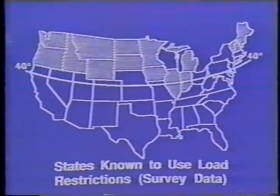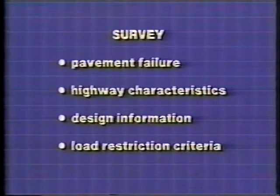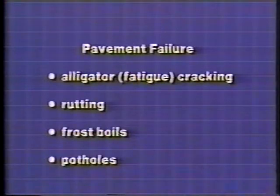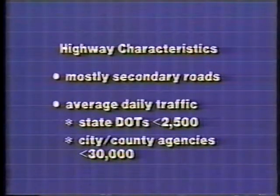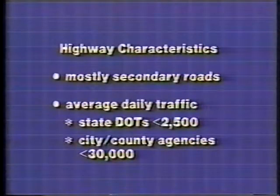Where are load restrictions normally used in the United States? A 1985 survey showed that the shaded states use load restrictions, which coincides with the area north of the 40-degree latitude line. The survey asked about types of pavement failures, highway characteristics, design information, and load restriction criteria. Load restrictions are applied to both primary and secondary roads, but mostly secondary. State agencies generally apply load restrictions to roads with an average daily traffic less than 2,500 with 10% trucks or less. Local city and county agencies apply restrictions to roads with an average daily traffic up to 30,000 with up to 10% trucks.